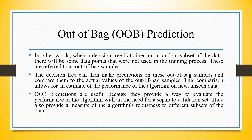In other words, when a decision tree is trained on a random subset of the data, there will be some data points that were not used in the training process. These are referred to as out-of-bag samples. The decision tree can then make predictions on these out-of-bag samples and compare them to the actual values, allowing for an estimate of the algorithm's performance on new unseen data. Out-of-bag predictions are useful because they provide a way to evaluate the performance of the algorithm without the need for a separate validation set.